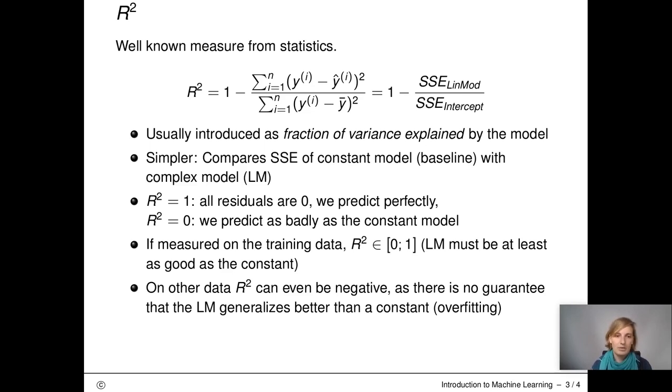If R squared is 1, this implies that all residuals are 0 and our complex model predicts perfectly. If R squared is 0, this implies that we are as bad as the constant model. If computed on a training data, R squared is always between 0 and 1.